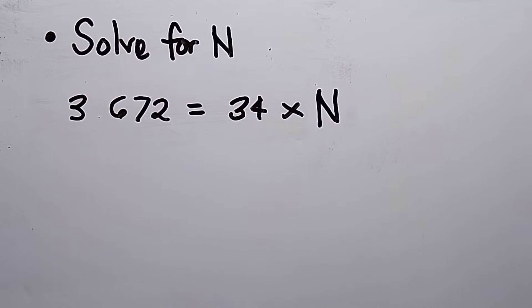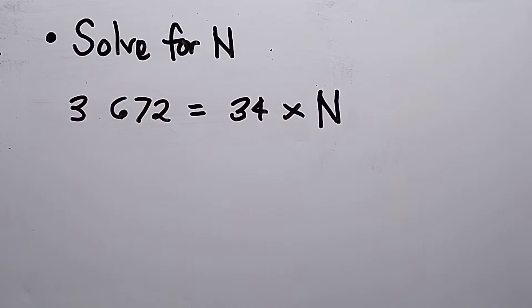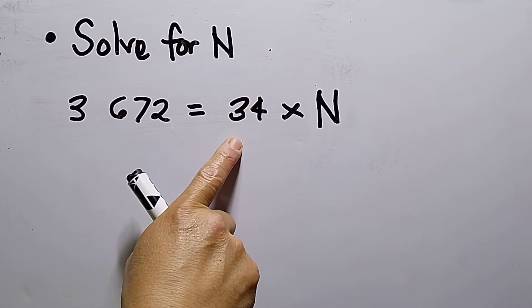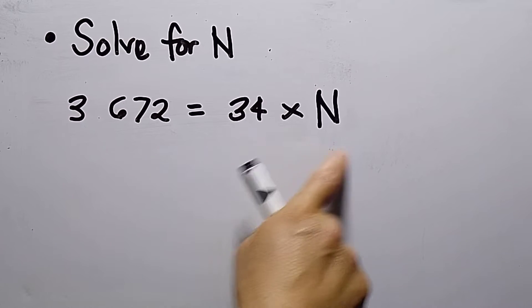Hello to my viewers. Today's topic is solving for the value of N. This math is intended for grade 4 students. I have here number one: 3672 is equal to 34 times the unknown, which is N.